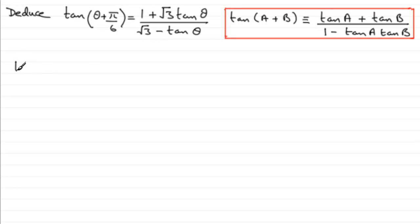So if we start with the tan of theta plus pi upon 6, then theta is treated as A and B is treated as pi upon 6. So, this is going to be equal to tan theta plus tan of pi upon 6, all divided by 1 minus tan theta multiplied by tan of pi upon 6.